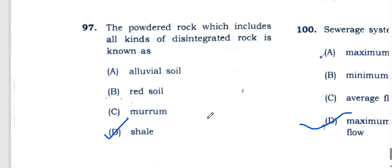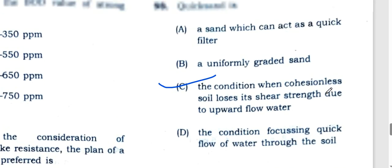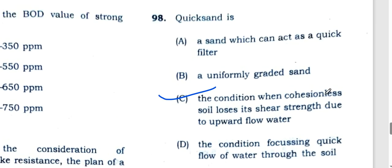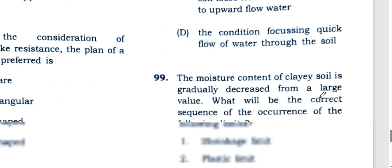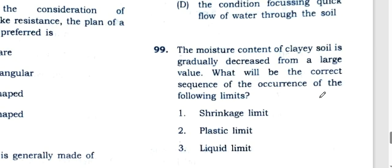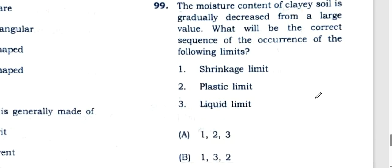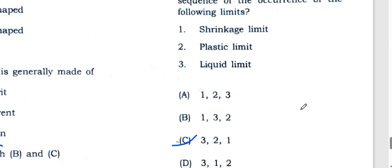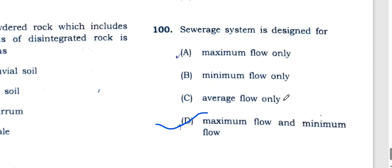The powdered rock which includes all kinds of disintegrated rock is known as soil, option D. Quick sand is the condition when cohesionless soil loses its shearing strength due to upward flow of water. If the moisture content of clay soil is gradually decreased from a large value, the correct sequence of occurrence of the following limits is liquid limit, then plastic limit, then shrinkage limit, so option C. Traditional sewerage system is designed for maximum flow and minimum flow, option D.